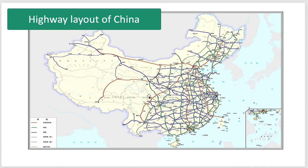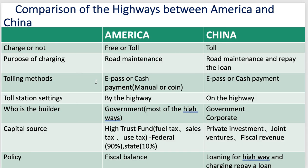Comparing highways between America and China: charge or not — America has free or toll roads; China, they're all tolled. The purpose is road maintenance in the US, while in China it's road maintenance and repaying the loan to build up, because they've built their highways very fast. Tolling methods include E-Pass or cash, the same in both countries. Who is the builder? The government does most highways here, but in China they even have corporate development of some roads. Capital sources in the US include the highway trust fund, fuel tax, sales tax, use tax — federal 90%, state 10%. In China it's private investment, joint ventures, and fiscal revenue. The policy in the US is for fiscal balance, while China uses loaning for highway construction and charges tolls to repay the loan.